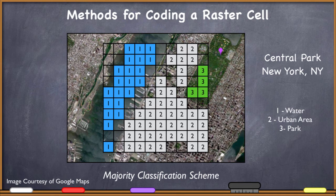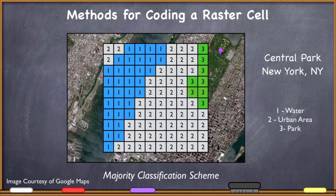Now let's run a majority classification scheme on the same mixed pixels. I went through and looked at all of them — most are pretty clear as to which land cover is the majority, though some were still a little close on visual inspection. If you go through and apply the majority classification scheme, you end up with a raster that looks like this, which is a little bit different from the centroid raster.